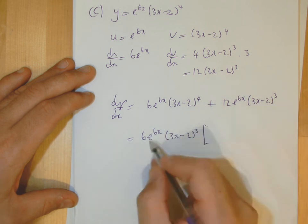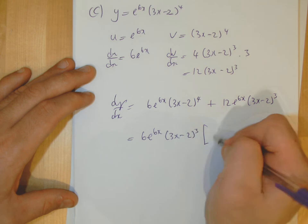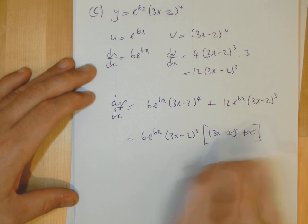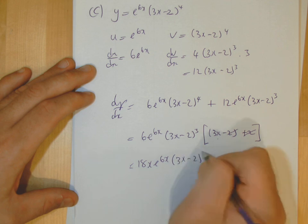Inside then, big square bracket. You're timesing this by another one of those brackets to get that first term, and then here you're timesing it by 2 to get this. And similar to what we saw earlier on, the 2's cancel, so you end up having then 3x here. So times that by the 6, you get 18x times e to the 6x times 3x minus 2, all cubed.